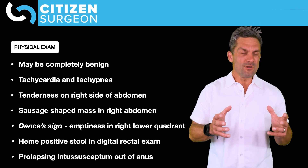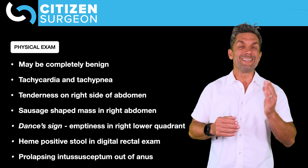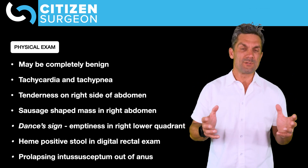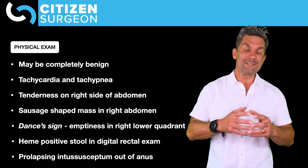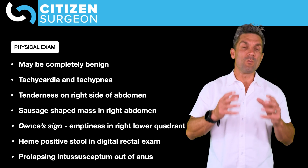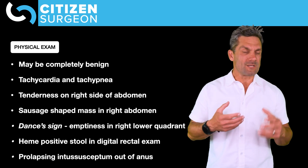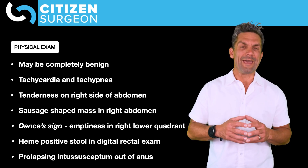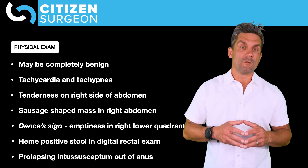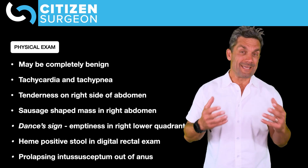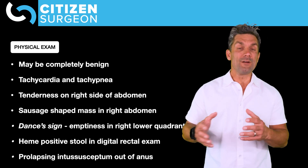What does the physical exam look like? All my physical exams start with CHANDLER: color, hydration, alertness, nutrition, disability, looking at the limbs, external support, and respiratory distress. That gives you that sick/not-sick picture. Looking at vital signs, you may see tachycardia and tachypnea. On examination of the abdomen with light and deep touch, you may have tenderness in the right lower quadrant, but tenderness can be in other parts of the abdomen as well.